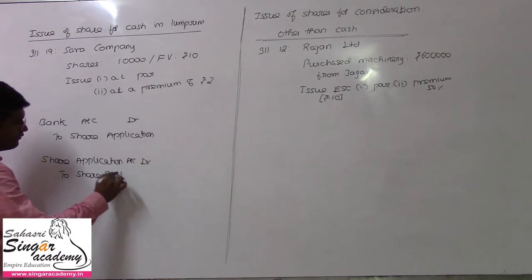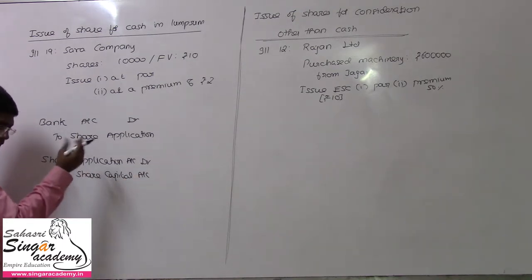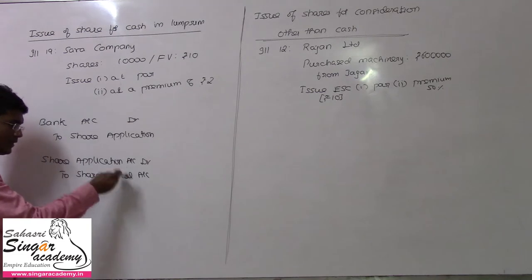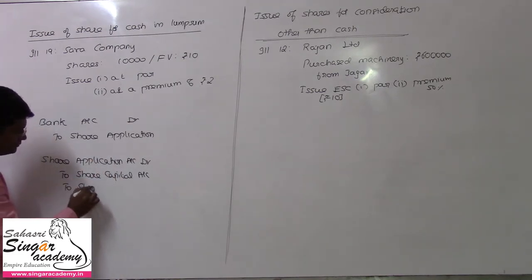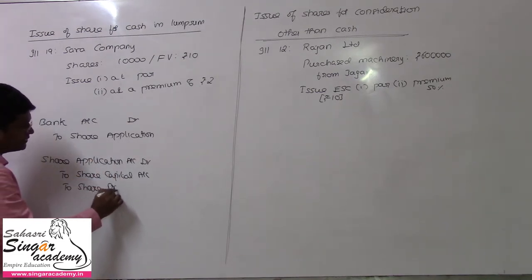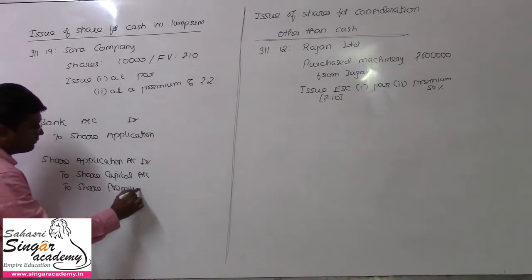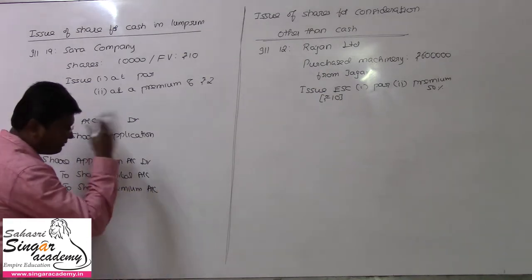But if you are collecting along with a premium, when you collect application money, one portion goes to share capital and another portion goes to share premium. That is how you pass the entry. It's very simple — multiple concepts apply here.